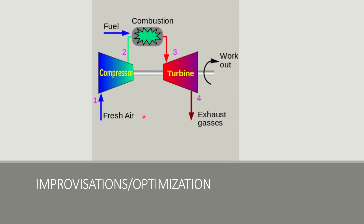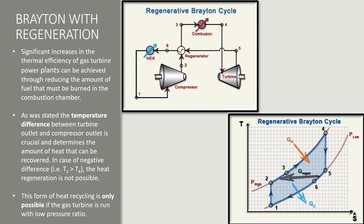Now we'll be discussing about optimization of the Brayton cycle, because it has very low efficiency if not optimized. We have regeneration — after the turbine expansion process, the exhaust gases have very high temperature. We use this to preheat the gases coming into the combustion chamber using a regenerator. Before, we were providing heat from 2 to 4; now we only need to provide from 3 to 4. So regeneration increases the efficiency.